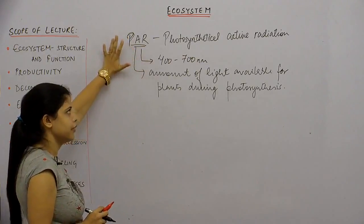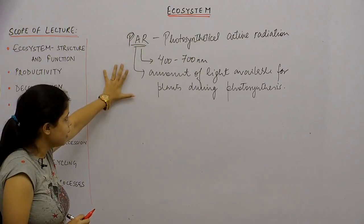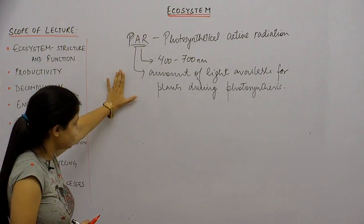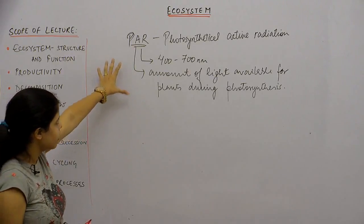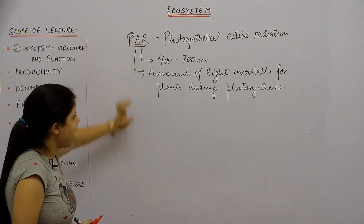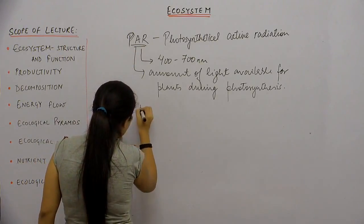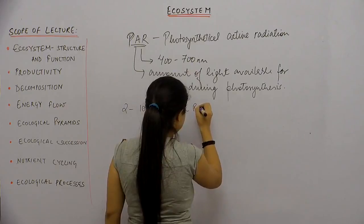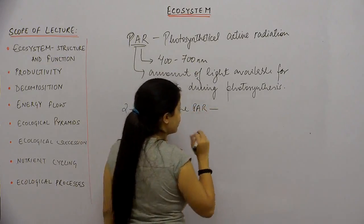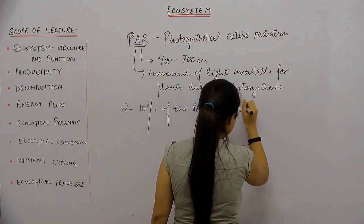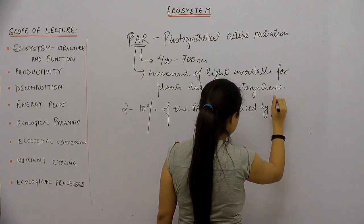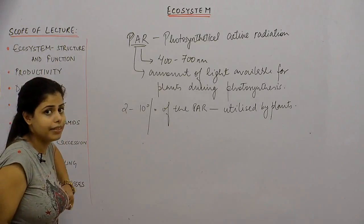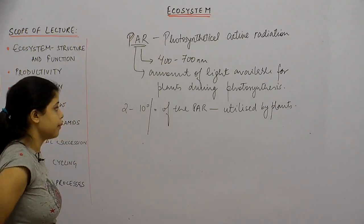PAR lies in the wavelength range of 400 to 700 nanometers. Less than 50 percent of sunlight falls under PAR, and surprisingly, only 2 to 10 percent of the PAR is actually utilized by plants during photosynthesis.